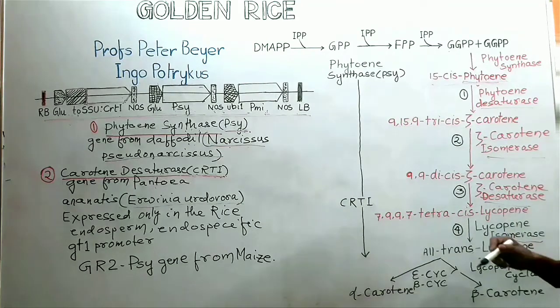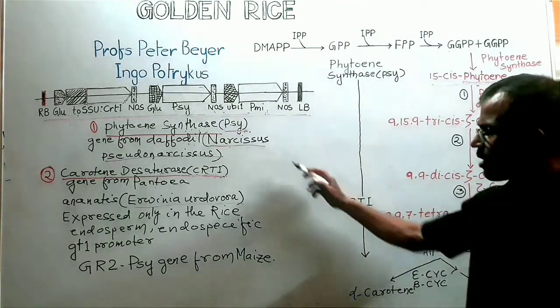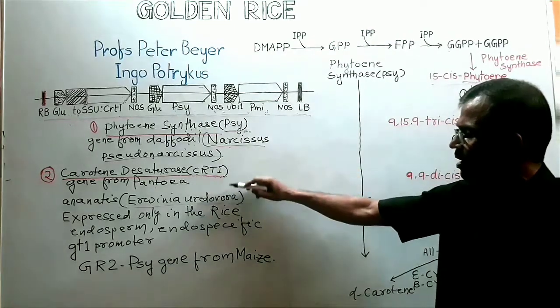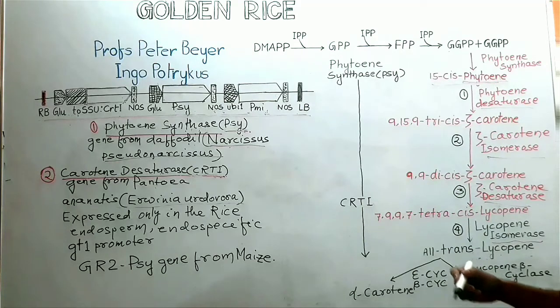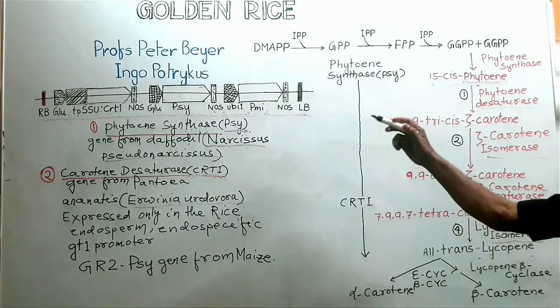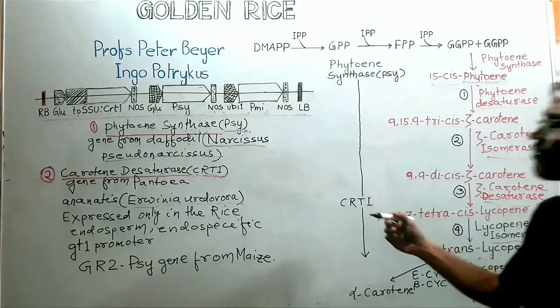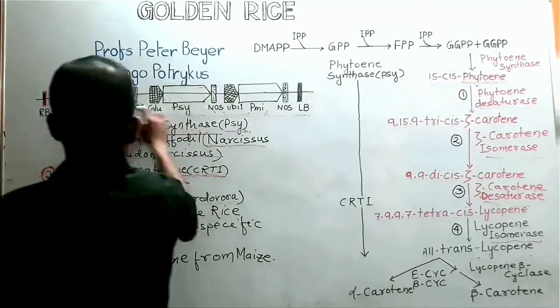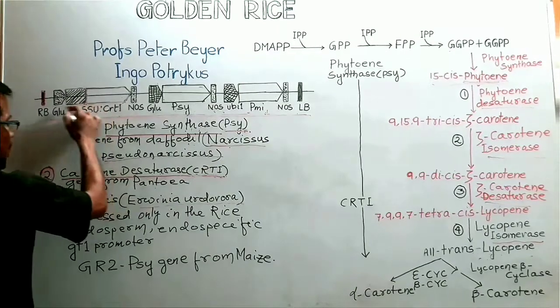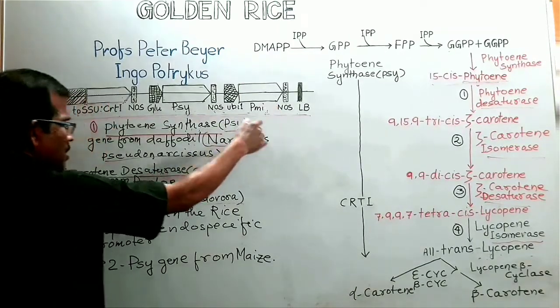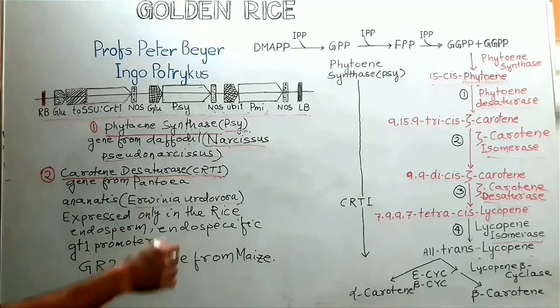By introducing these two transgenes, one is PSY gene and other is CRTI gene, the beta-carotene was synthesized in the rice grain of golden rice. Next transgene, this is the structure of gene construct that is used to generate golden rice.